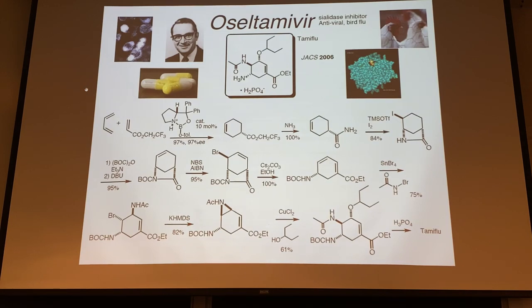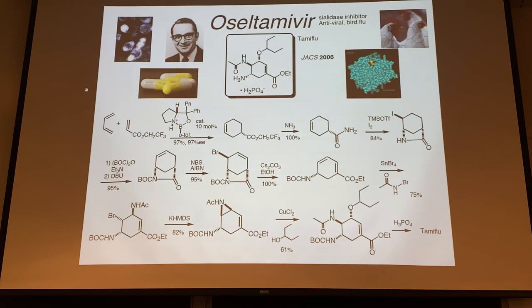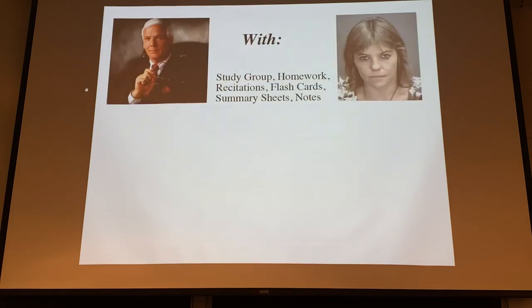Tamiflu is a breakthrough antiviral drug that inhibits fusion of the virus with the host cell, shutting down influenza infection. It's made using a Diels-Alder reaction, which we'll cover in chapter 16. The Diels-Alder reaction involves butadiene with an alkene ester, forming cyclohexene. There are obviously many more steps to make the actual drug, but that key reaction is covered.